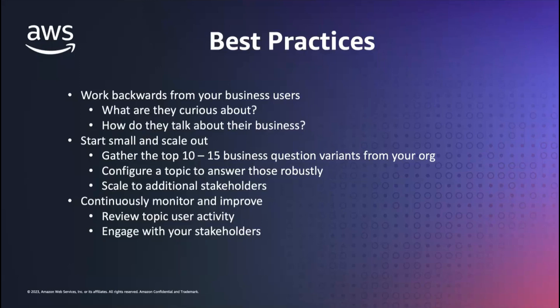Start small and scale out. Rather than thinking about bringing in all of your datasets into a topic at once and trying to answer all the questions your business has, think about it the other way. Gather the top 10 to 15 business questions and the variants of those questions from throughout your org. What are the most common things that people are asking about and what are all the different ways they're asking about them? How can you configure a topic to answer those questions robustly and reliably? Once you have that and you're able to answer the top questions, then you can scale out to additional stakeholders.